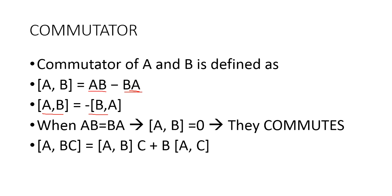Another main relation is: the commutator of A and BC is equal to the commutator of A and B, plus commutator of A and C, plus B times the commutator of A and C.